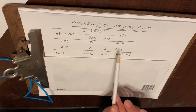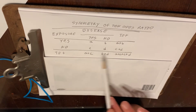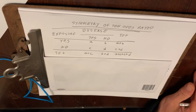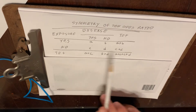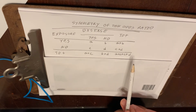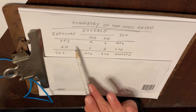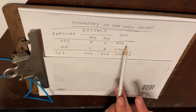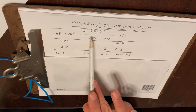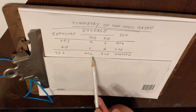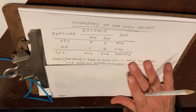So we have four possibilities, and we're going to use A, B, C, and D instead of actual numbers because the formula for the odds ratio is really simple. The first row marginal is A plus B, the second row marginal is C plus D, the first column marginal is A plus C, and the second column marginal is B plus D.